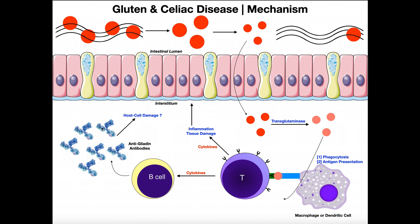One question we should ask: can these anti-gliadin antibodies cause host cell damage? It's possible — that would be an autoimmune reaction, which is not unheard of in physiology. What is known is that the helper T cells, when they activate the immune response, are releasing a bunch of cytokines — chemical signals that initiate an immune response — which triggers inflammation. That inflammation causes other immune cells to come to the area, and they start destroying the local tissue, with the end result being tissue damage.